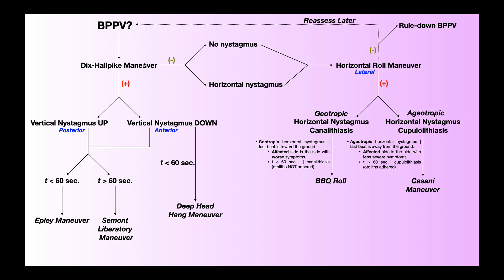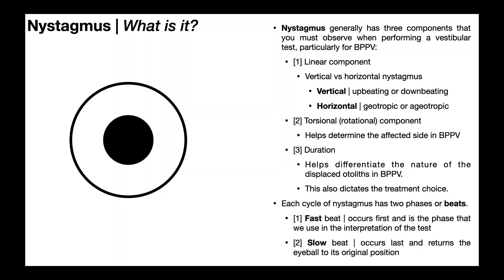Going back to a positive Dix-Hall-Pike maneuver, it's the reproduction of vertical nystagmus. We covered nystagmus in a lot of detail in the previous video, so if you want that level of detail, go back and watch that video. Its link will be in the description of this video as well. I'm going to hit a few high points for nystagmus.